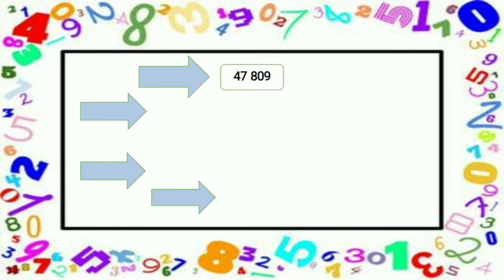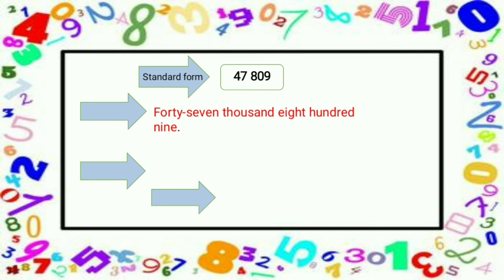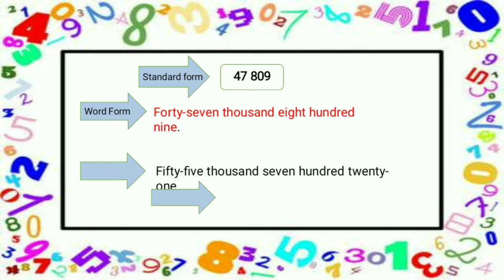We have here the first given, 47,809, which is written in standard form. So you write the word form of these digits. The word form of this number is forty-seven thousand, eight hundred nine. If that is your answer, then your answer is correct. For the second given, 55,721 is written in word form. If your answer is 55,721, then your answer is correct.